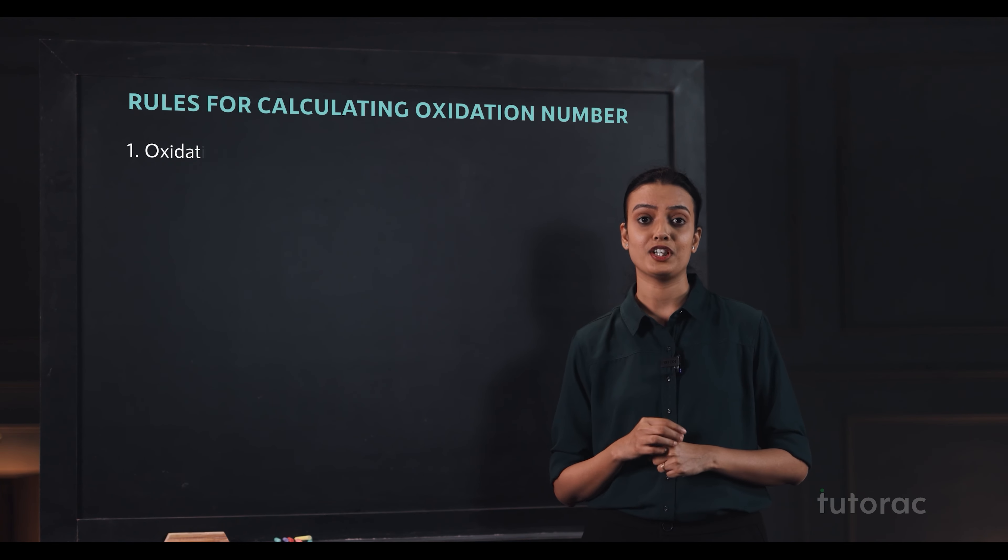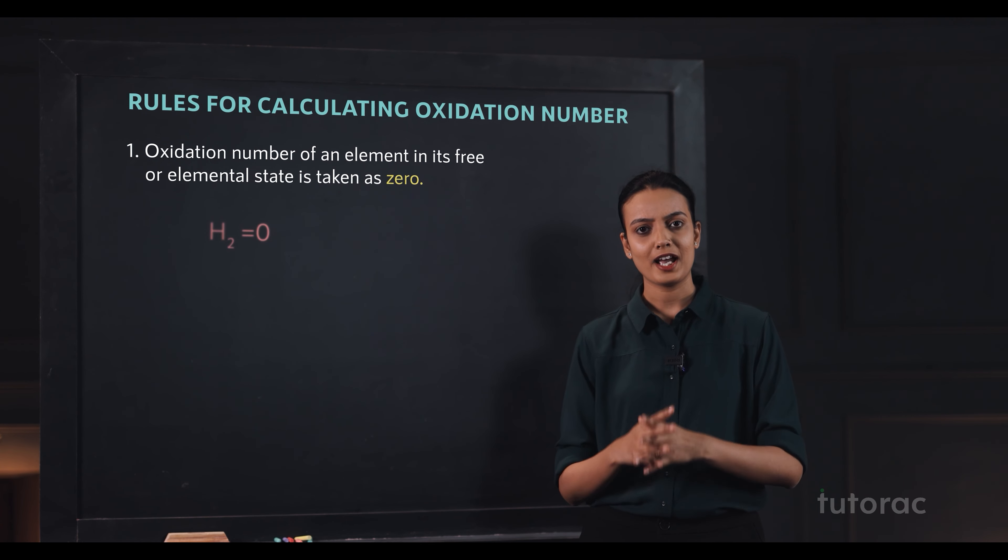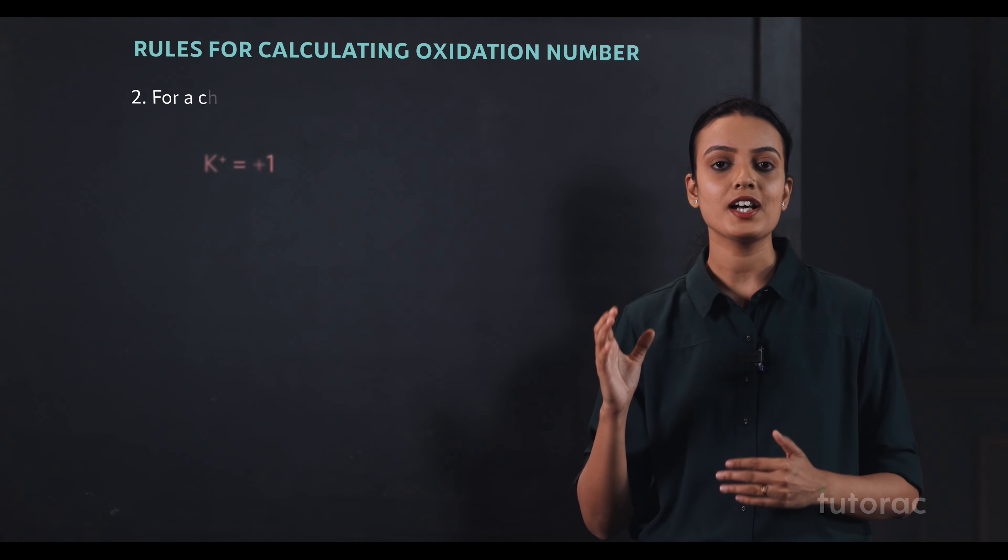First, oxidation number of an element in its native or elemental state is taken as 0. Like for hydrogen, helium, sodium, it is taken as 0. Second, for a charged species, the charge present on it indicates its oxidation number.